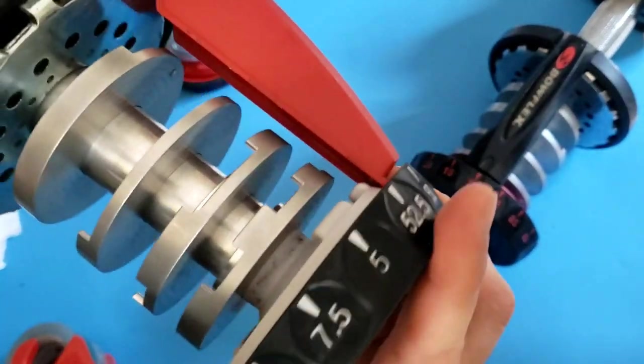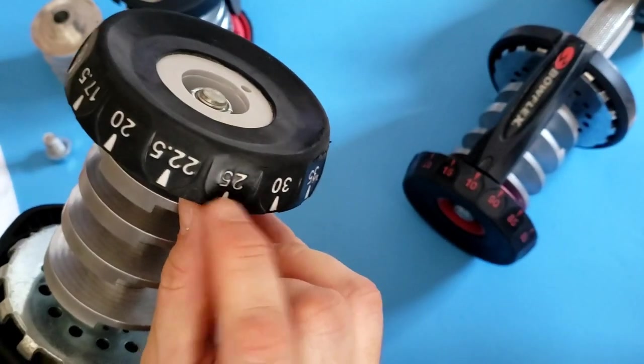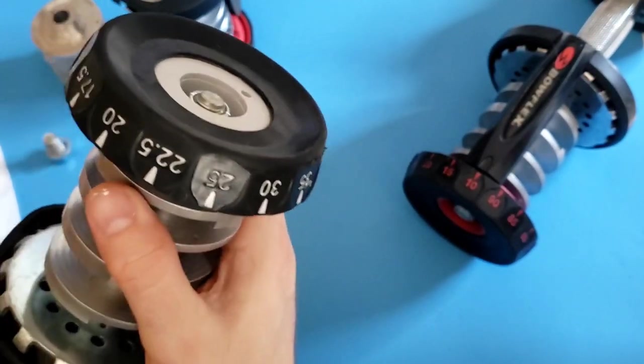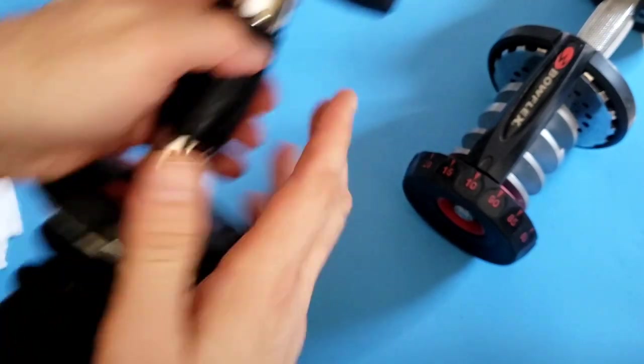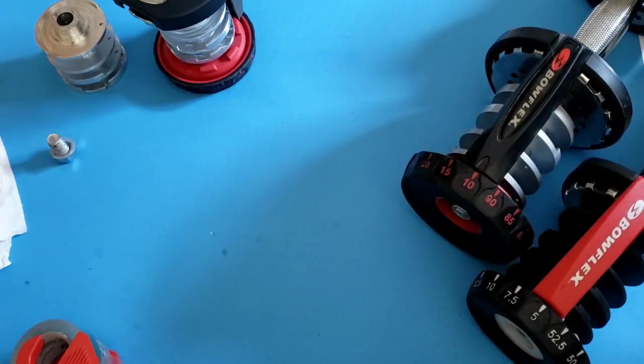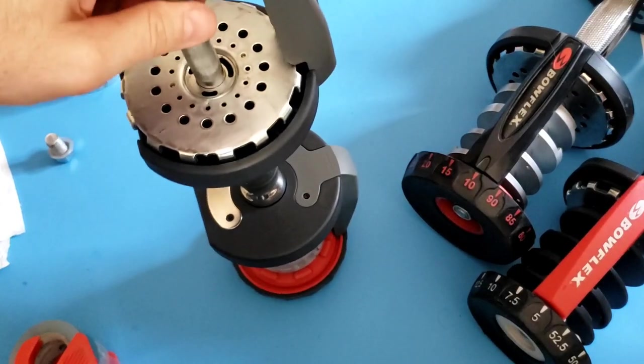That's the ball bearing acting as a positive stop at each one of these increments. So it's an important part of the assembly, and hopefully now you can deal with the ball bearings and springs more effectively.